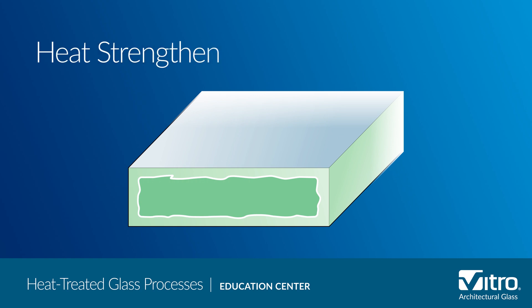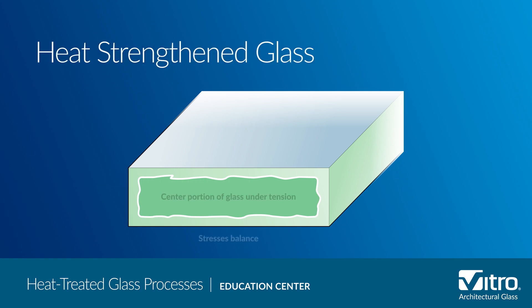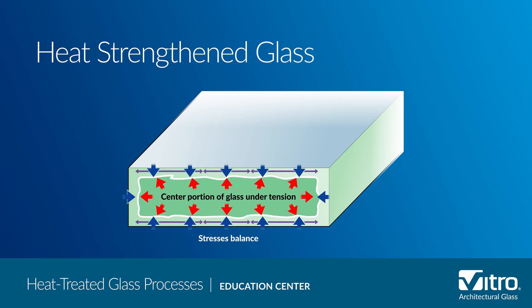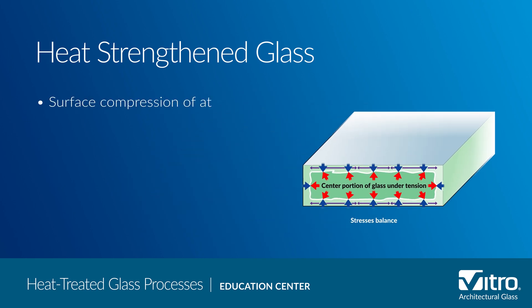With heat strengthened glass, the cooling process is slower, which means the compression strength is lower. As a result, heat strengthened glass is approximately twice as strong as annealed glass.